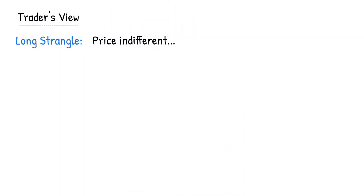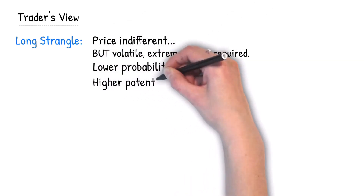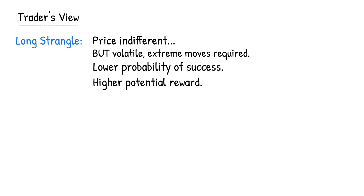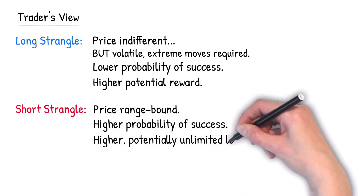Let's summarise the trader's view based on the selection of either a long or short strangle. A long strangle is direction neutral but requires very large moves to be profitable — the stock price needs to be very volatile. Since the range the stock must move outside of is large, there's a lower probability of success, compensated by higher potentially unlimited rewards. A short strangle is a range-bound strategy. Since the range the stock needs to stay inside is large, there's a higher probability of success, though with a higher potentially unlimited loss.